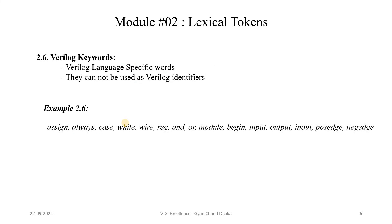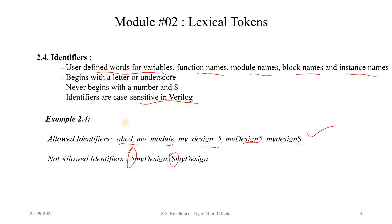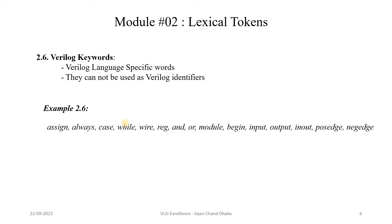The sixth type of Verilog HDL token is Verilog keywords. Verilog has some specific keywords which we cannot use for our own purposes — we can only make use of them as the language intends. That means Verilog keywords cannot be used as identifiers, where an identifier is a user-defined variable, function, or module name. Examples of keywords are: assign, always, case, while, wire, reg, etc. These are Verilog keywords and we cannot use them for user-defined purposes.